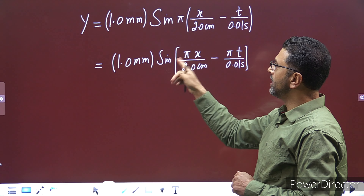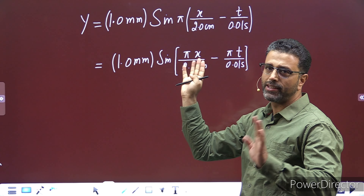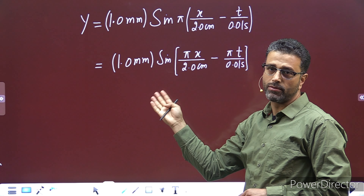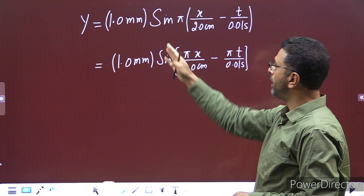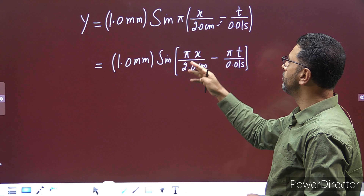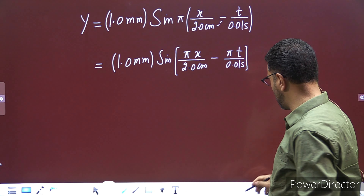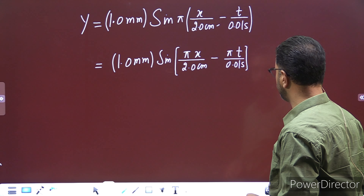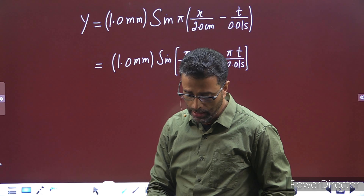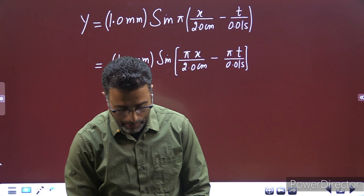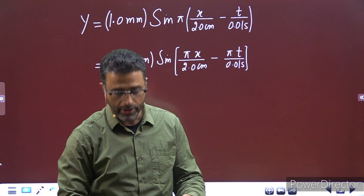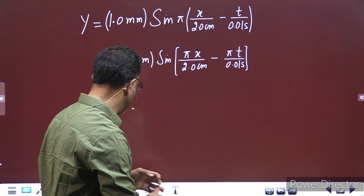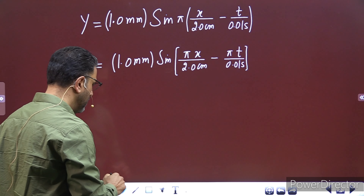Pi को मैं अंदर ले रहा हूँ, क्योंकि many a time students calculations में pi को भूल जाते हैं। बस और कोई change यहाँ पर नहीं की है। Let's move on now. पहले part में हमें time period और wavelength निकालनी है।